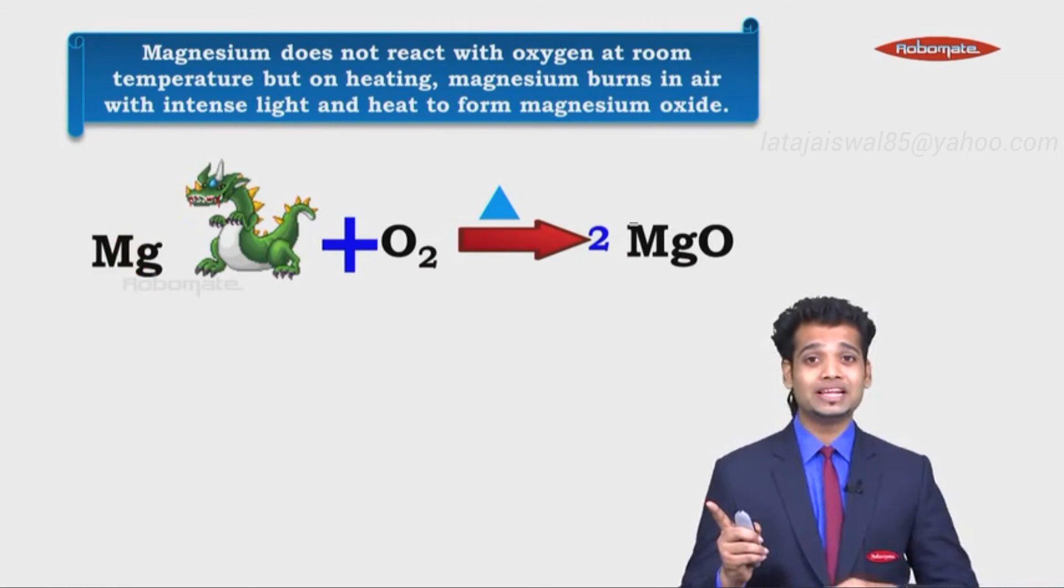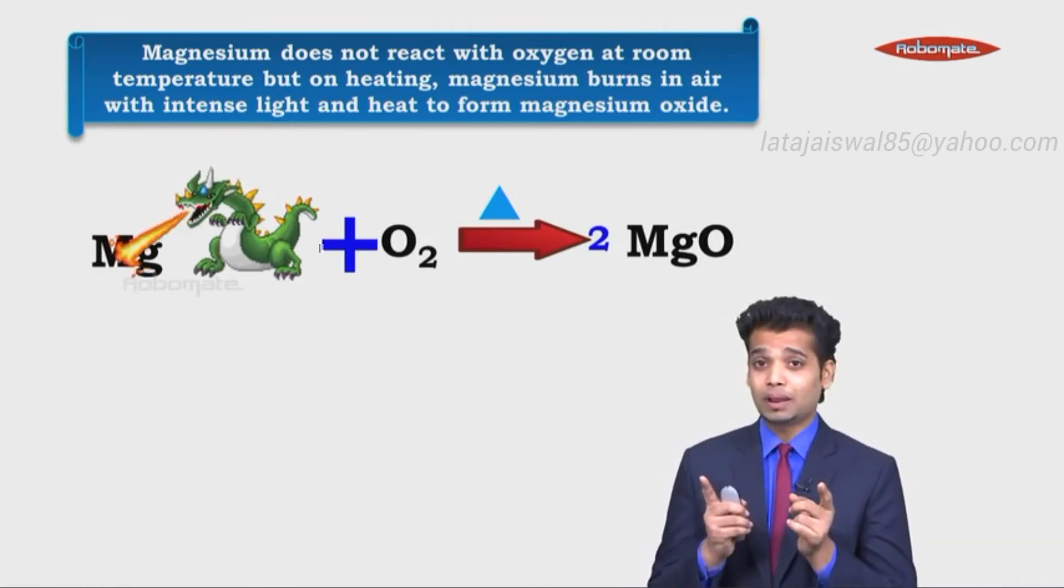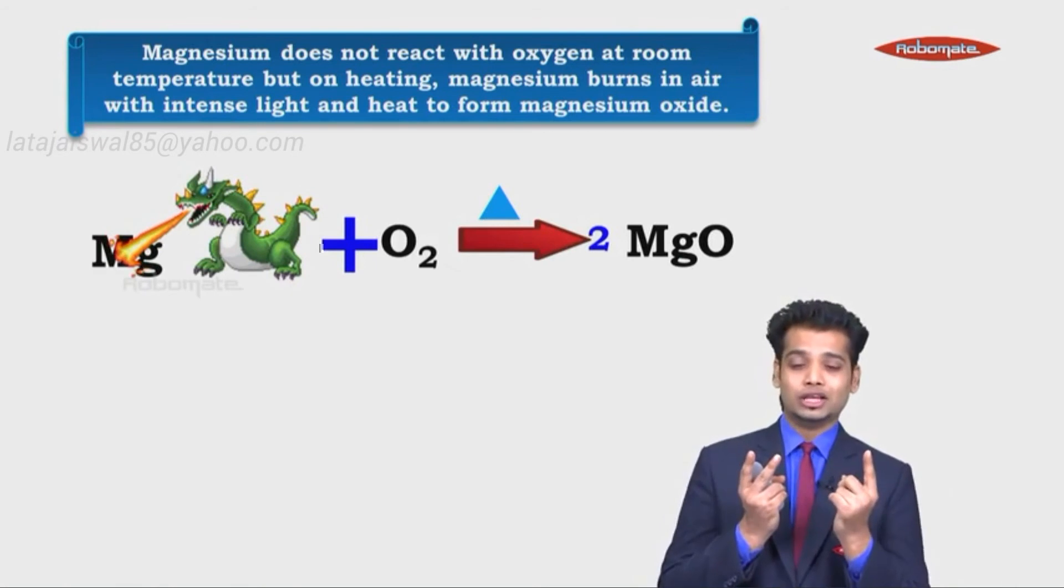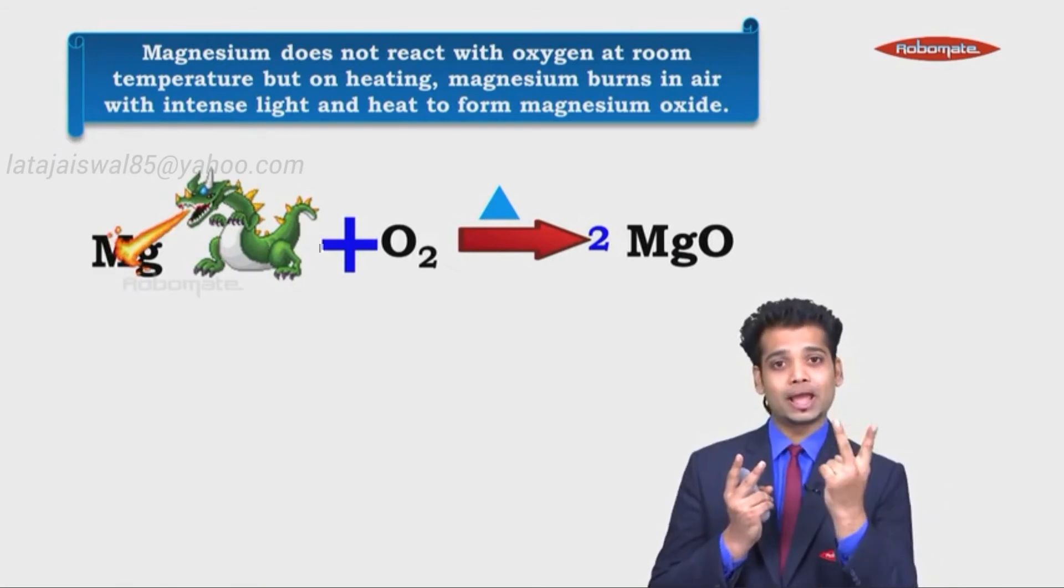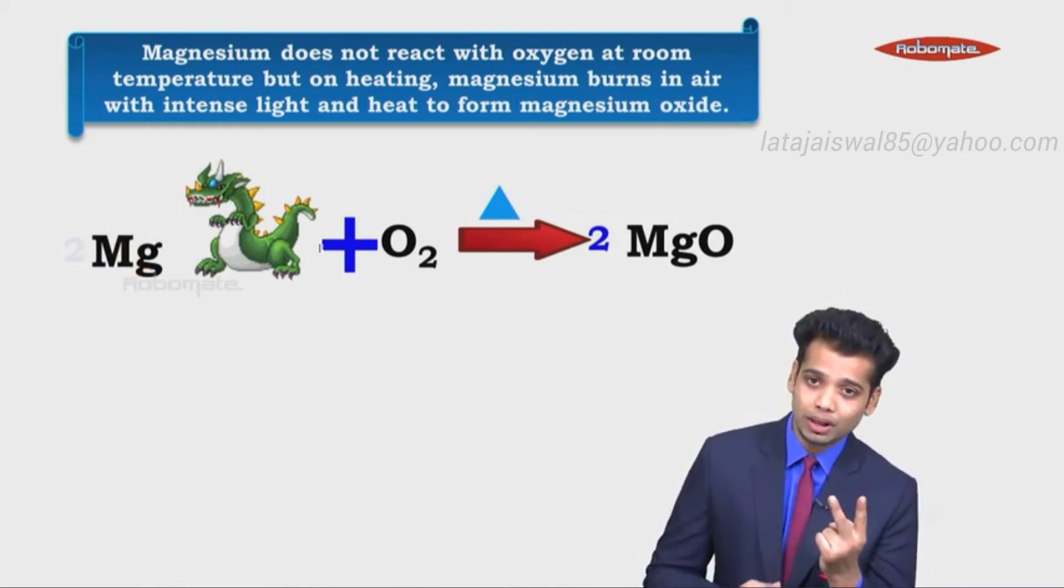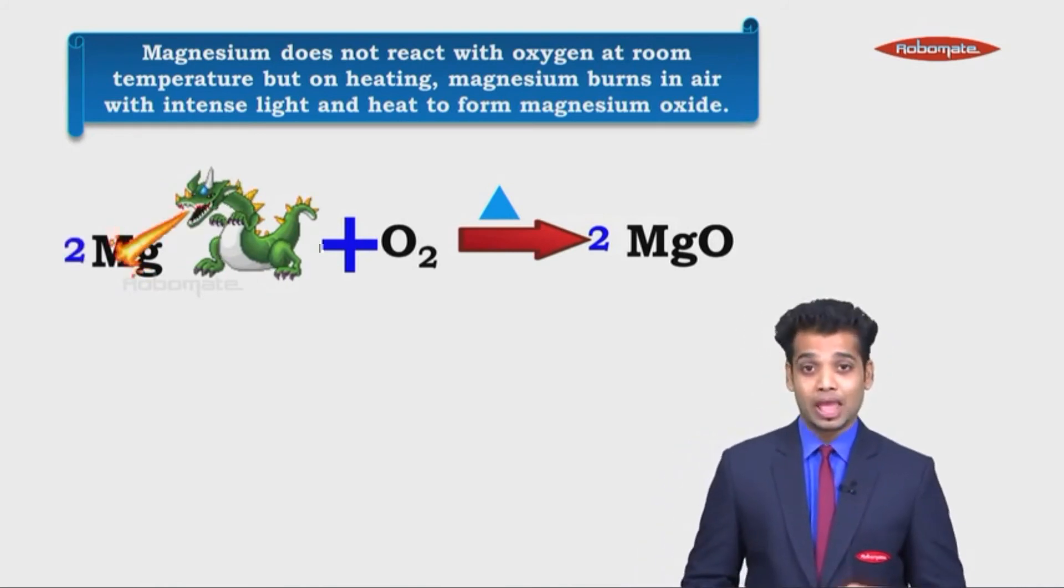Magnesium is 1, magnesium is 1, so you multiply by nothing. Oxygen is 2, oxygen is 1, so you multiply MgO by 2, making Mg 2. So you multiply 2 on the left hand side. Like I said, zinc will burn in air only on strong heating to form zinc oxide.